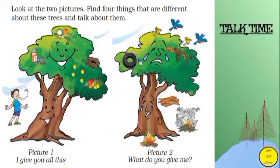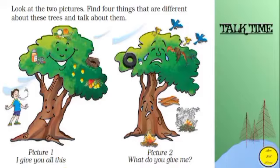Look at the two pictures. Find four things that are different about these trees and talk about them. Picture 1 — the first tree is saying 'I give you all this.' In picture 2 — 'What do you give me?'